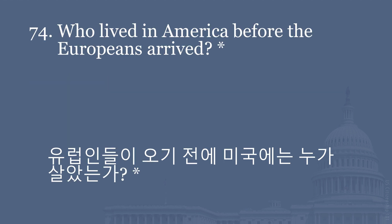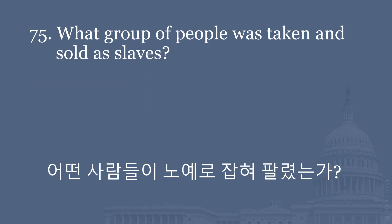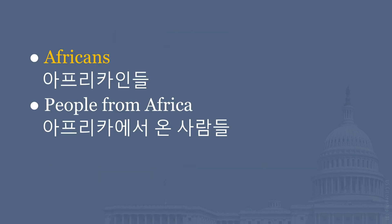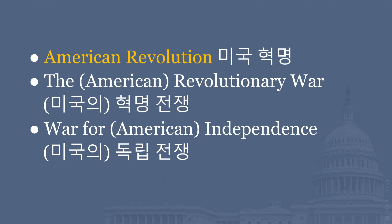Who lived in America before the Europeans arrived? American Indians. Native Americans. What group of people was taken and sold as slaves? Africans. People from Africa. What war did the Americans fight to win independence from Britain? American Revolution. The American Revolutionary War. War for American Independence.